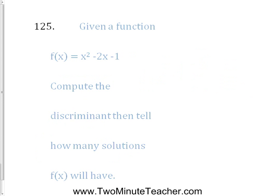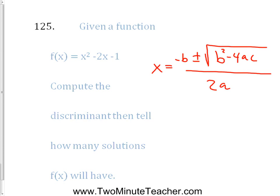Given f(x) = x² − 2x − 1, compute the discriminant and tell how many solutions f(x) will have. The discriminant is the part of the quadratic formula under the square root: b² − 4ac. The quadratic formula is x = (−b ± √(b²−4ac)) / 2a. The discriminant tells us how many solutions there are.